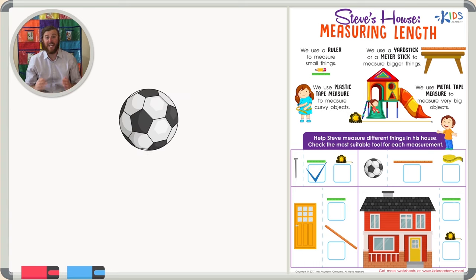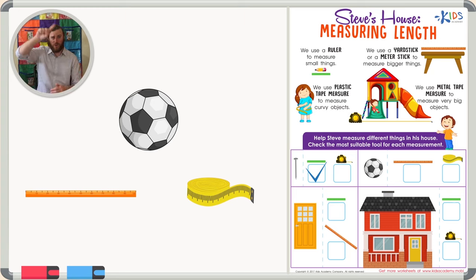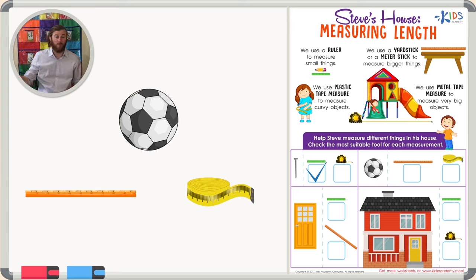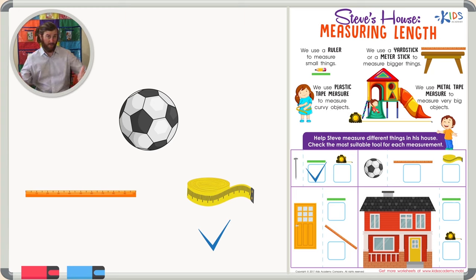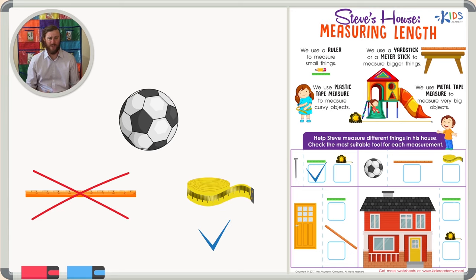The next object we want to look at is a soccer ball, and for this measurement we want to measure around the soccer ball. To measure an object that's curvy or round, there's really only one choice we talked about: the plastic tape measure, because that will help us measure curvy or imperfect objects. A ruler would not be appropriate because there is no straight line to measure on a soccer ball.